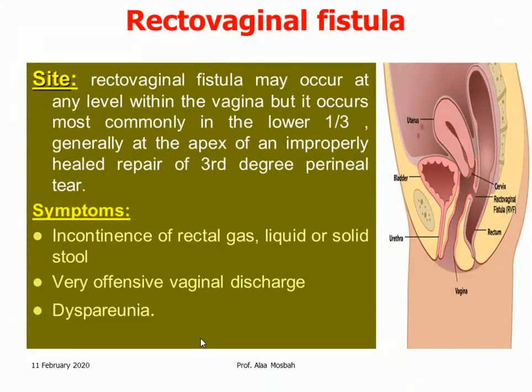The site of rectovaginal fistula may occur at any level within the vagina, but it occurs most commonly in the lower third, generally at the apex of an improperly healed repair of third or fourth degree perineal tear. Symptoms include incontinence of rectal gas, liquid or solid stool, very offensive vaginal discharge, and dyspareunia.